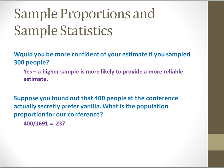Here are a couple more questions to think about. Would you be more confident of your estimate if you sampled 300 people rather than just 140? The answer is yes — the more people you sample, the more reliable your estimate will be. A larger sample is always better. The second question: suppose you found out that 400 people at the conference actually prefer vanilla. What is the population proportion? Rather than estimating, if someone told you the truth and you know for sure that 400 out of 1,691 people prefer vanilla, you can calculate the actual population proportion by dividing 400 by 1,691. You don't have to estimate it.